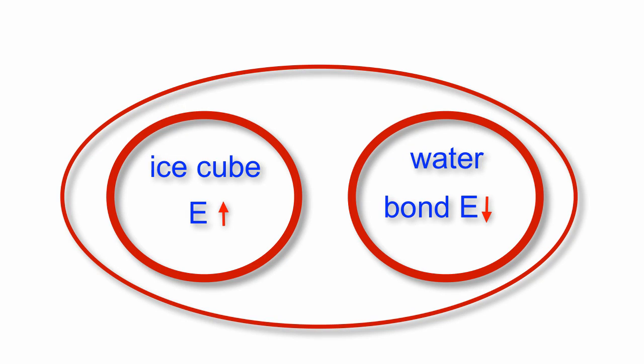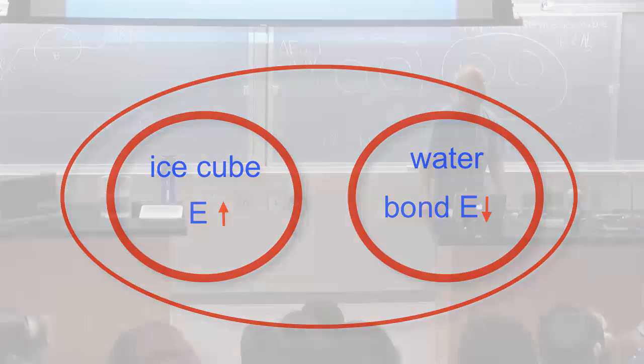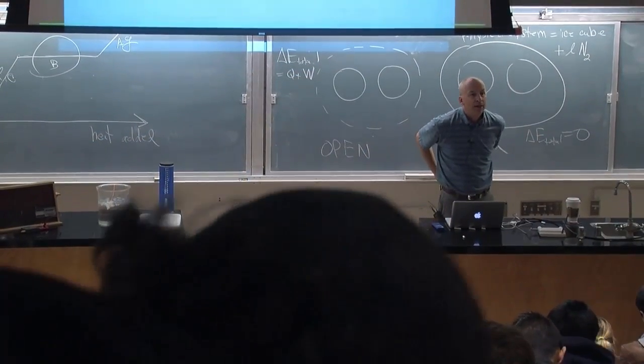The bond energy system of the ice water went down because a whole bunch of bonds formed as ice and water and stuff got welded to that really cold ice cube. A bunch of bonds formed so the bond energy system went down.